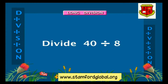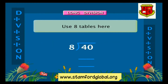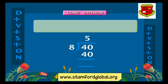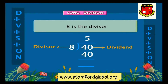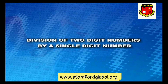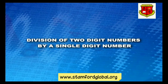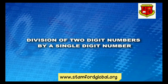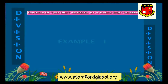Example two: divide forty by eight. Using the eight times table: eight fives are forty. Here forty is the dividend, eight is the divisor, and five is the quotient with no remainder.